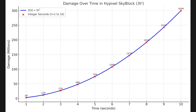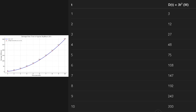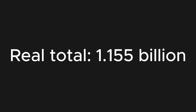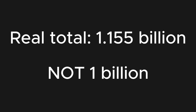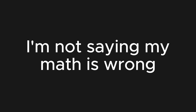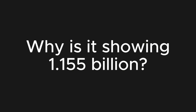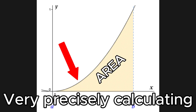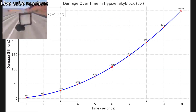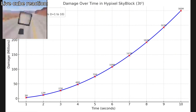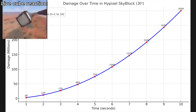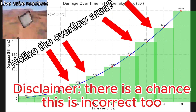Here is a graph that represents exactly what we just did. If you do the math and add all the values you see on the graph, you'll find that the total sum is actually 1.155 billion and not one billion. I'm not saying my math is wrong — so what exactly happened here? Why is it showing 1.155 billion? What you have to know about integrals is that when you do integrals, you're very precisely calculating the area under the curve, which is what we just did. But in this instance, in my example, we're actually measuring the graph using blocks instead of actual values.